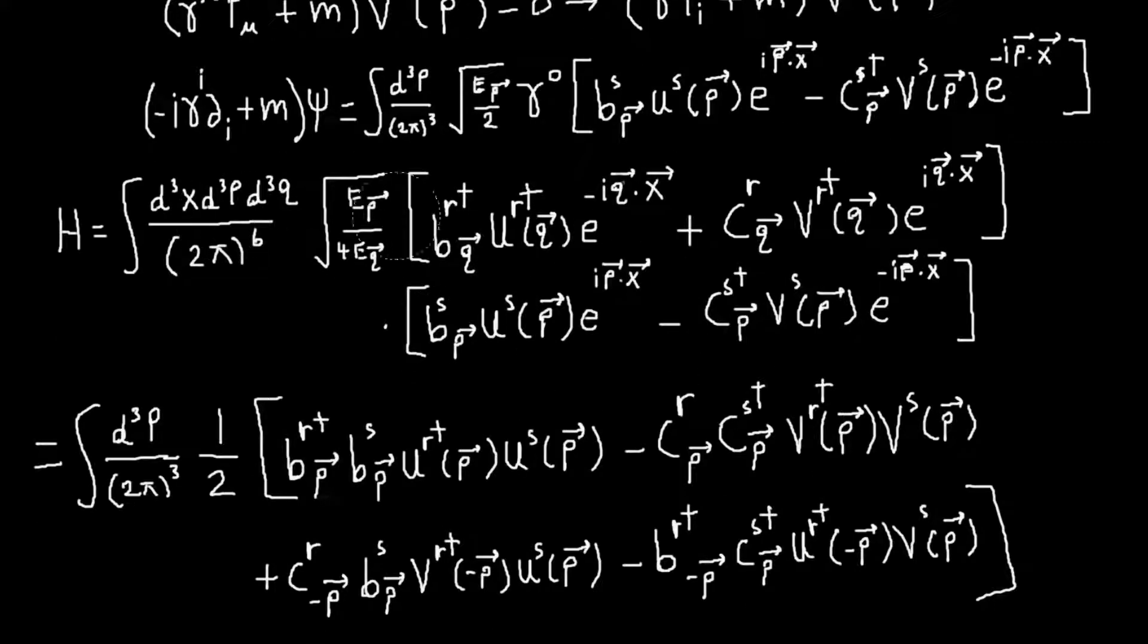So I foiled it out. And then I've also, so just like before, when we've done these Hamiltonian calculations, we do the integral over x first. And so we can basically replace, once we've multiplied these things through, we'll get like a delta p minus q for these terms, and then delta p plus q for some terms. And that will enable us to do the momentum integral over q.